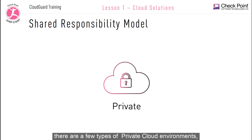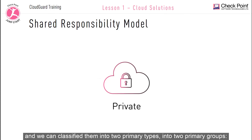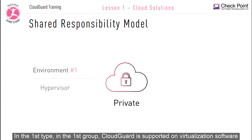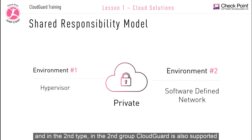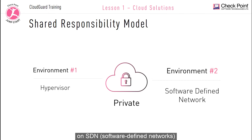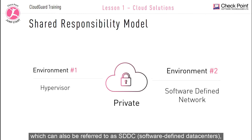There are a few types of private cloud environments, which we can classify into two primary groups. In the first group, CloudGuard is supported on virtualization software such as hypervisor operating systems. In the second group, CloudGuard is also supported on software-defined networks, which can also be referred to as software-defined data centers.